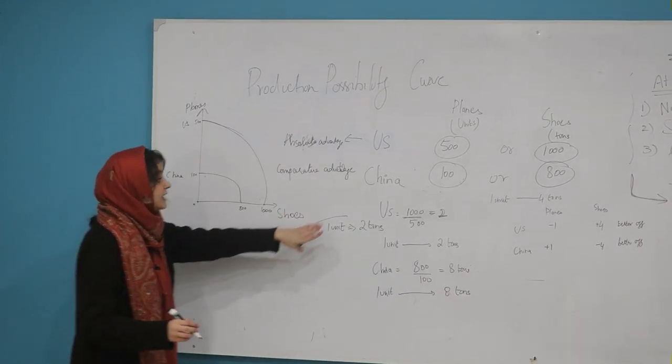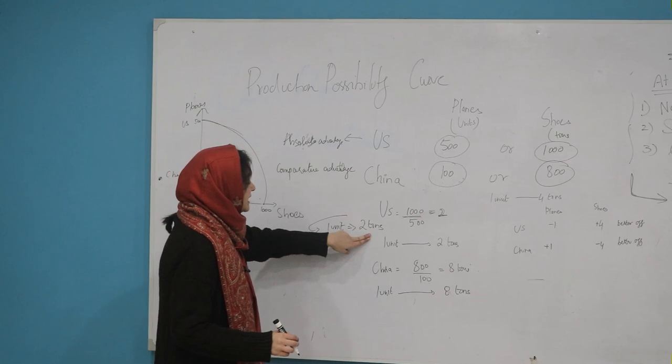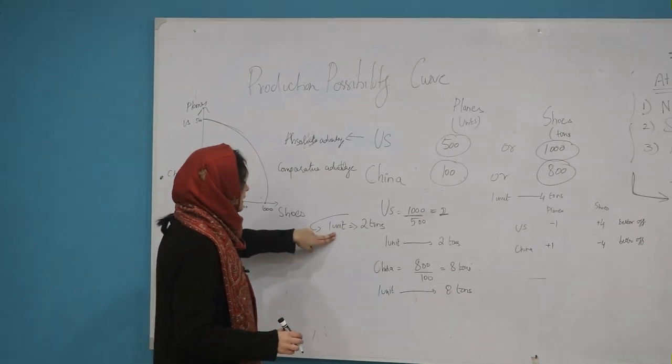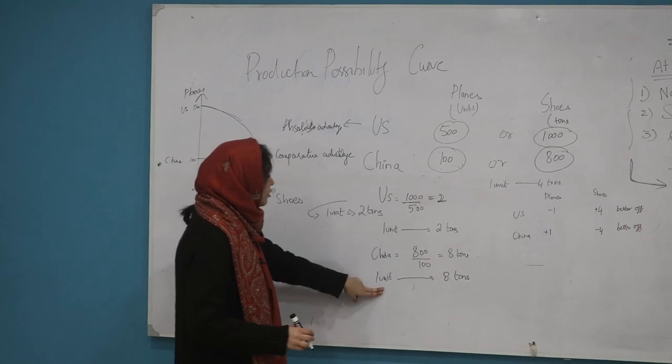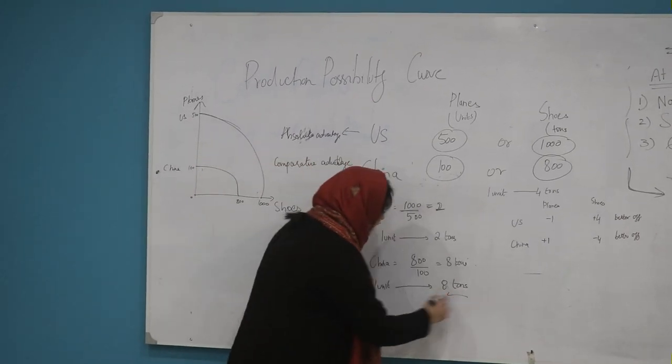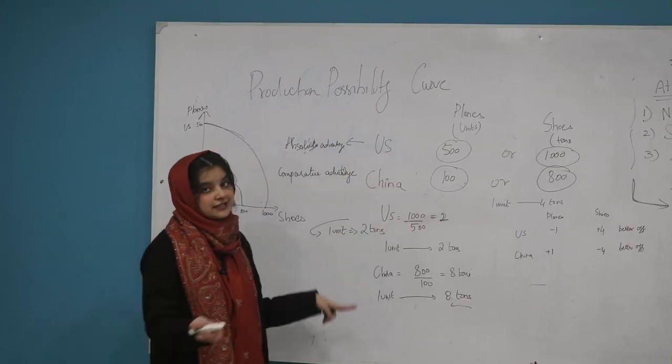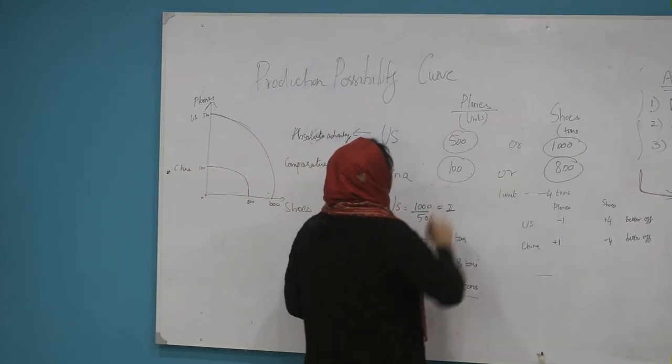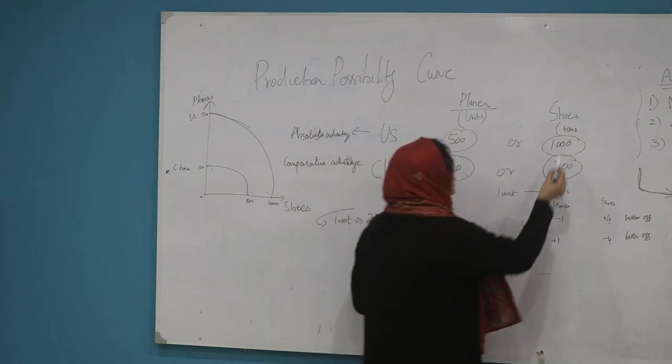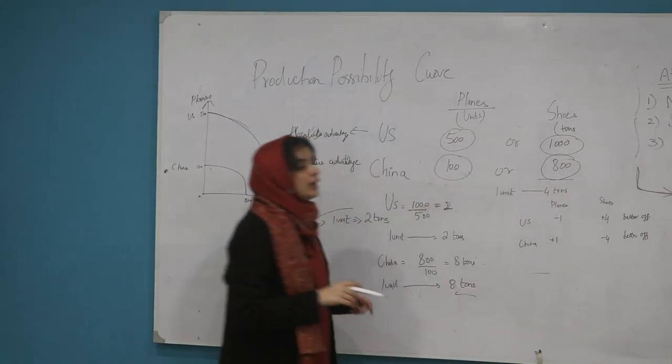That means that the US has lower opportunity cost for planes compared to China. And China will be better at making shoes because it has lower opportunity cost for shoes compared to the US. So US will have comparative advantage in planes, and China will have comparative advantage in shoes.